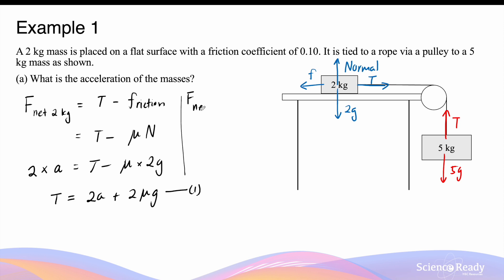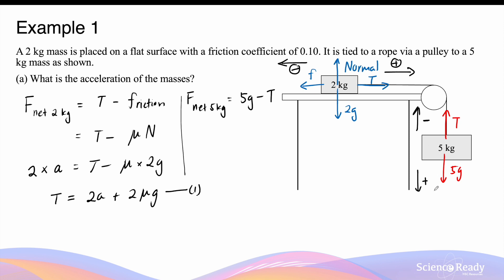Let's look at the net force acting on the 5kg mass. The net force equals its weight force, 5g, minus the tension. Here I'm treating the downward direction as positive and the upward direction as negative. The reason is that previously for the 2kg mass, I treated the direction to the right as positive. If the 2kg mass moves to the right — the positive direction — then the 5kg mass has to travel downward, which is also the positive direction. So moving down is treated as positive for the 5kg mass, which is why the net force is written as 5g minus tension.